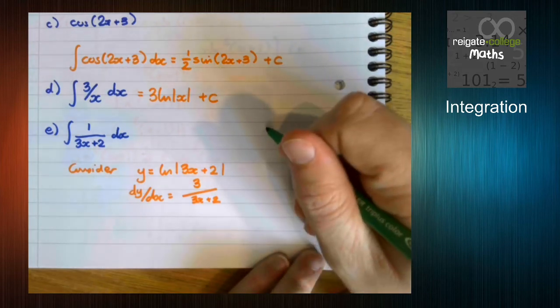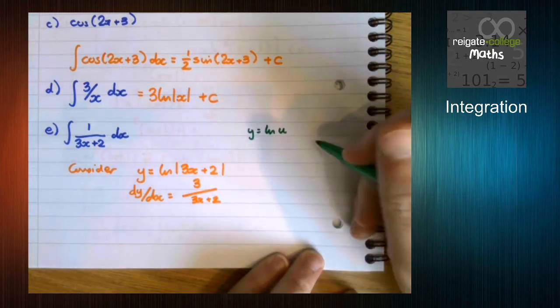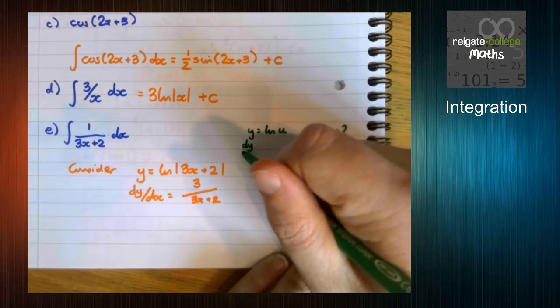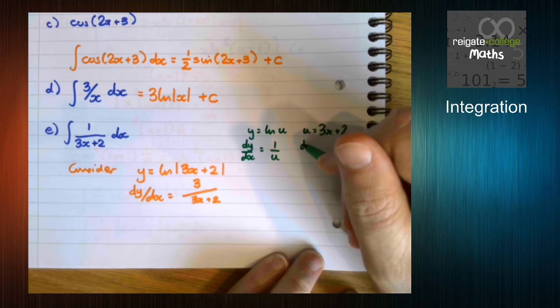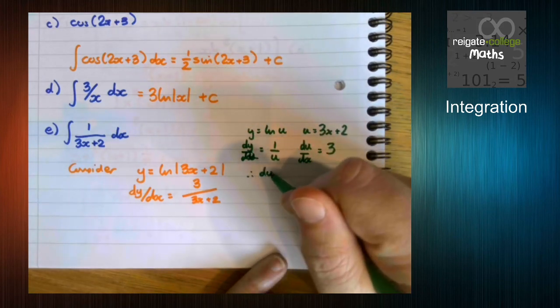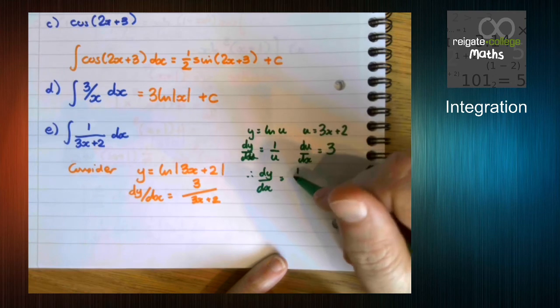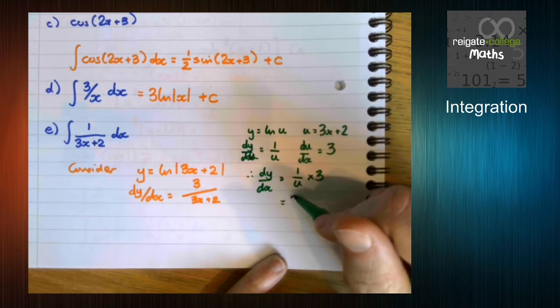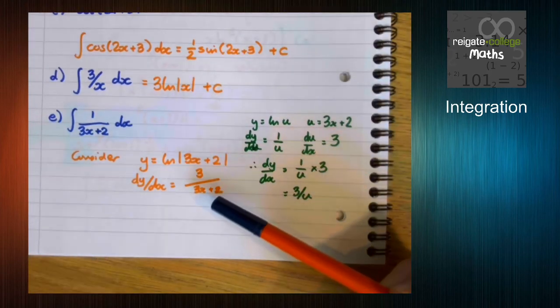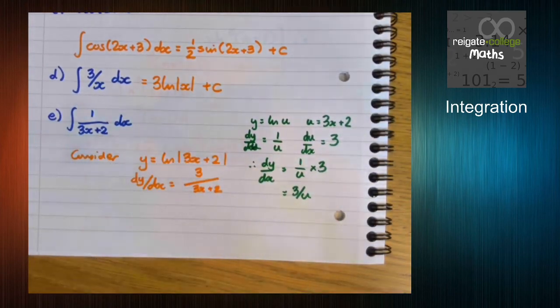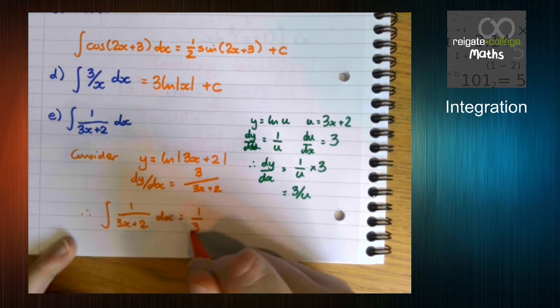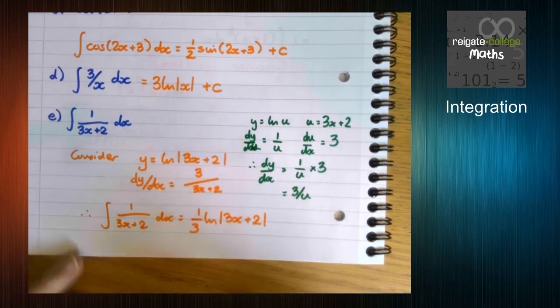If we think about the chain rule, we can consider y equals ln u, where u is 3x plus 2. Using the chain rule, we differentiate both. Therefore, dy by dx is 1 over u times 3, which gets us to this 3 over 3x plus 2. How do we now get from here to here? Well, we divide by 3. So the integral of 1 over 3x plus 2 is a third ln 3x plus 2 plus c.